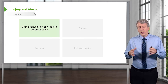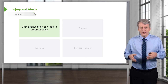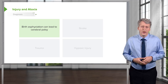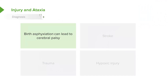One common cause of ataxia in children is injury to the brain. In children in particular, common injuries include birth asphyxiation, which can lead to cerebral palsy, stroke, trauma, and hypoxic injury. All of these are varieties of injuries that can affect the brain and result in ataxia in children.